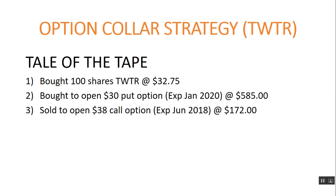So the tale of the tape: number one, you own 100 shares of Twitter at $32.75. Number two, you bought a $30 put option expiring 23 months from now, January 2020, and you spent $585. And you sold to open a $38 call option expiring in 111 days, June 2018, and you got $172 for that.